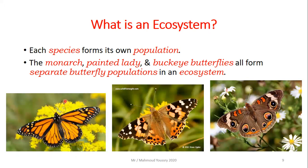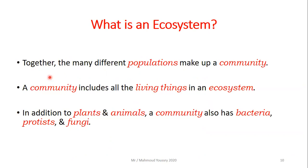Look carefully at three pictures of butterflies. Although you might say they are all butterflies, they are actually three very different species. The first is the monarch butterfly, the second is the painted lady butterfly, and the third is the buckeye butterfly. Each one forms a separate butterfly population in an ecosystem because they are different species.